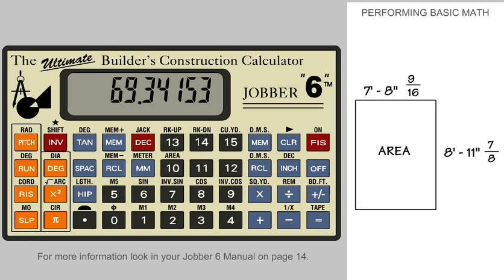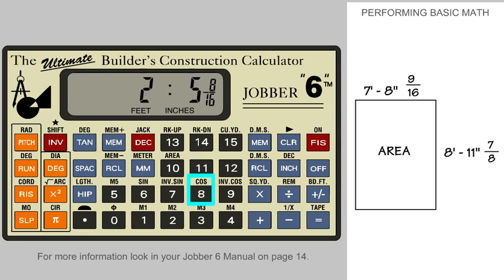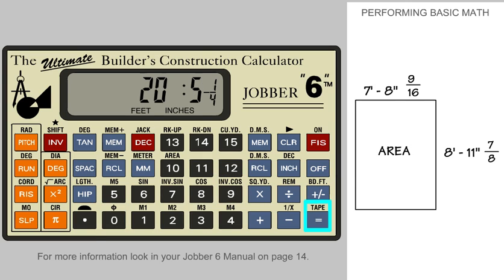This is the area or square feet for a rectangle using those two dimensions. However, if we multiply or divide a feet, inch, and fraction dimension by a whole number, we will get a feet, inch, and fraction answer — because the calculator assumes you are working with spaces rather than finding an area. If we have a rectangle that is 25 feet, 8 and 9 sixteenths by 22 feet even, this will give us the area of the rectangle.